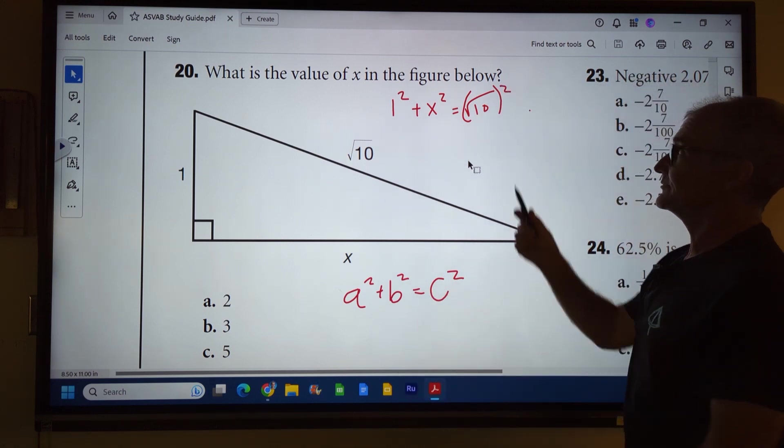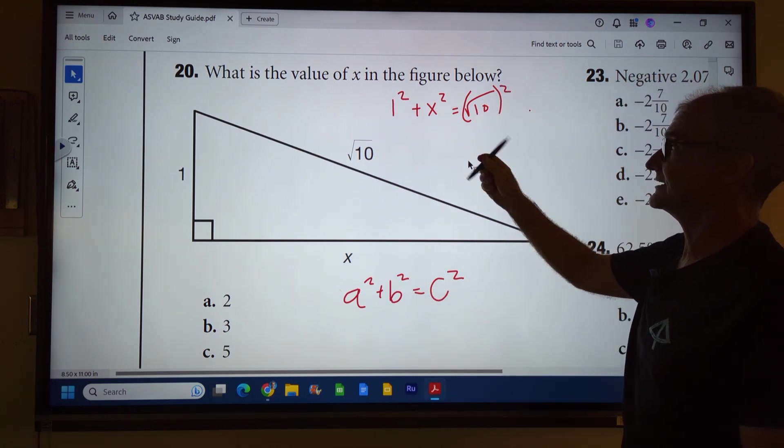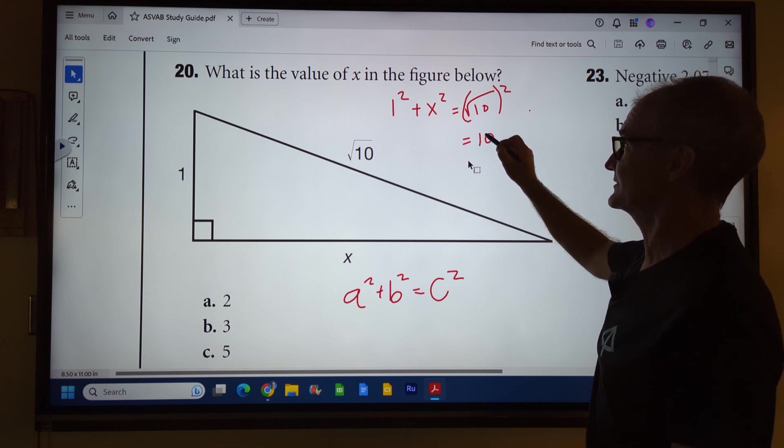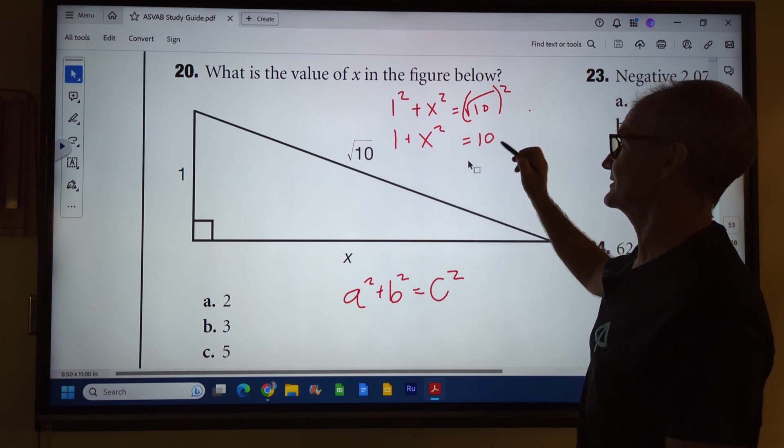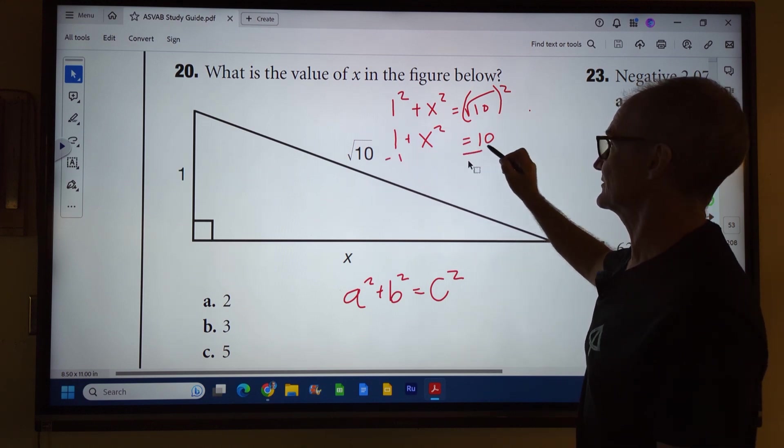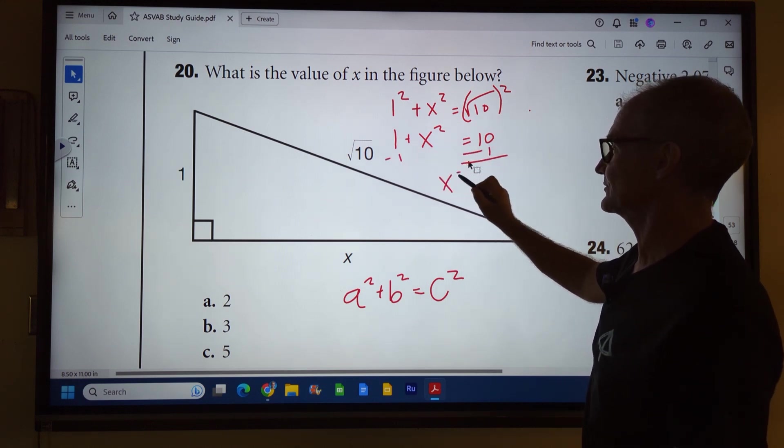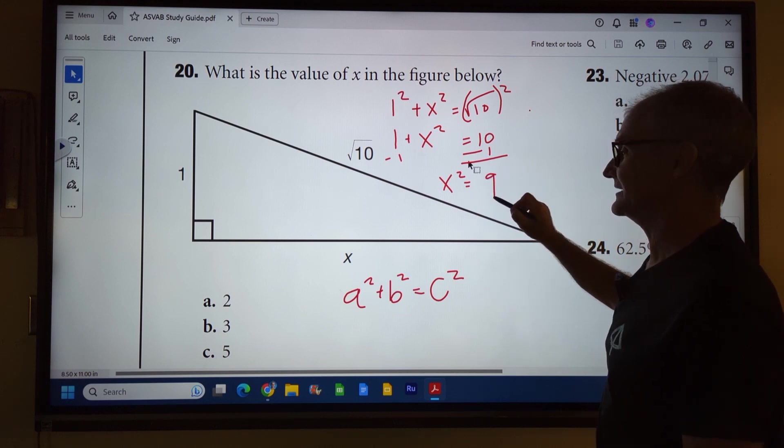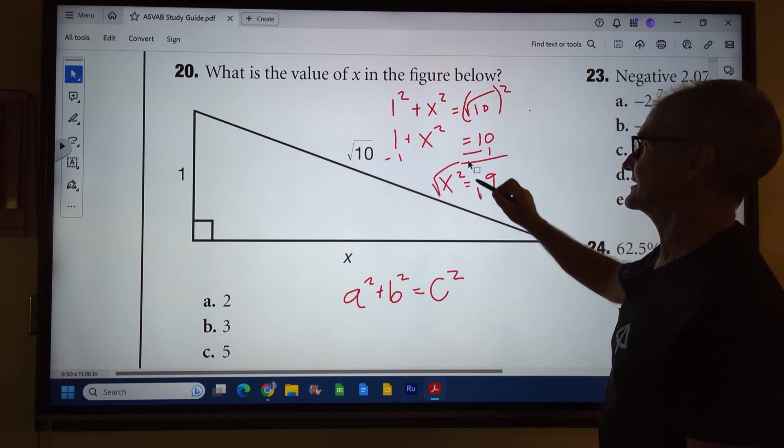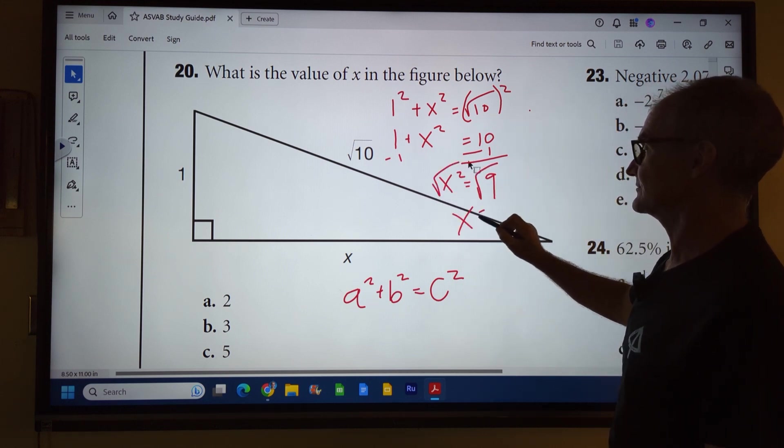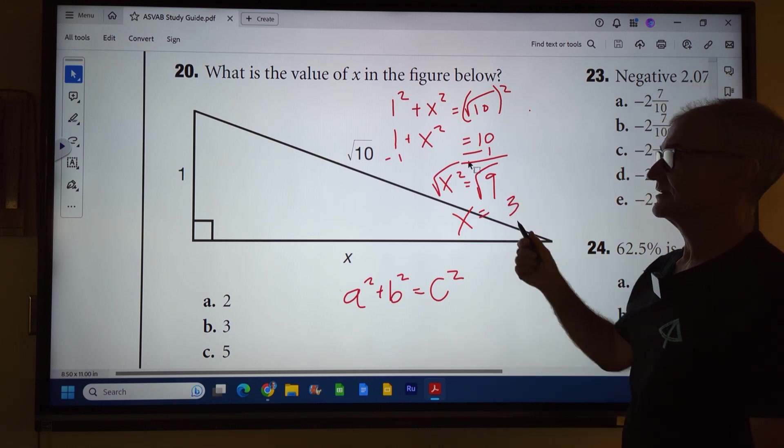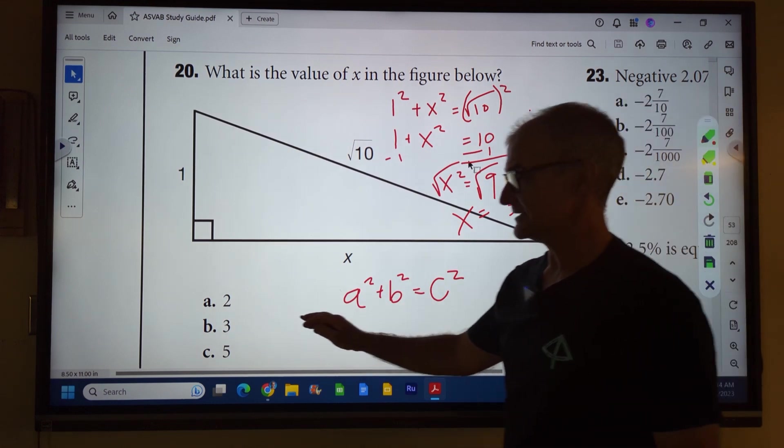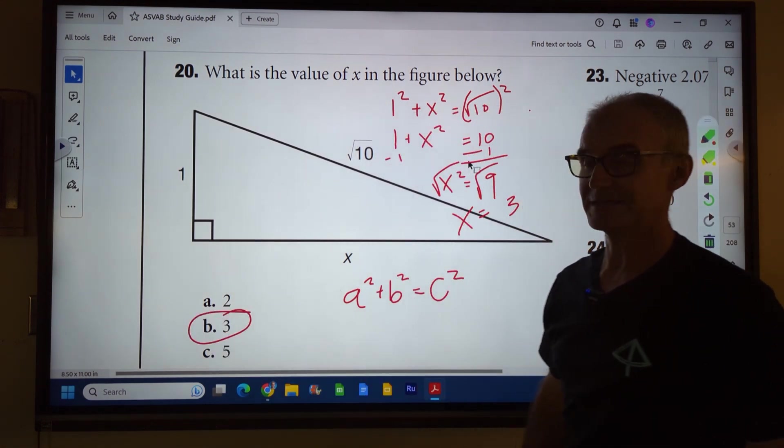Looks kind of hard, but a square and a square root kind of cancel each other out. So that's just going to be 10. One times one is one. So I have one plus x squared equals 10. I subtract one from both sides and I get x squared is equal to nine. Square root of both sides, x is equal to three or negative three, but I discard the negative. We're talking about the length of a side. Correct answer, answer B right here.